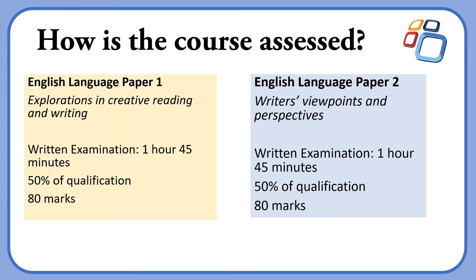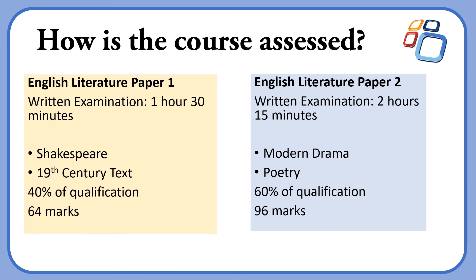The course is assessed with two exams in each GCSE. You can see on the screen the two English papers for English language. Students also take a spoken language endorsement in addition to this — a small presentation which they conduct in class — and for English literature the same two examinations at the end of their course.